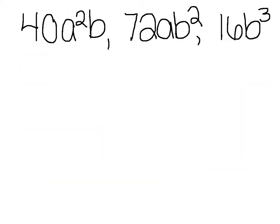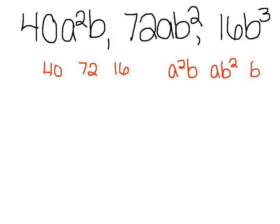When we have numbers and variables, we look at two different things. We look at the numbers — 40, 72, and 16 — and the variables — a squared b, ab squared, and b cubed. The GCF of a monomial is the product of the GCF of the numbers and the GCF of the variables.